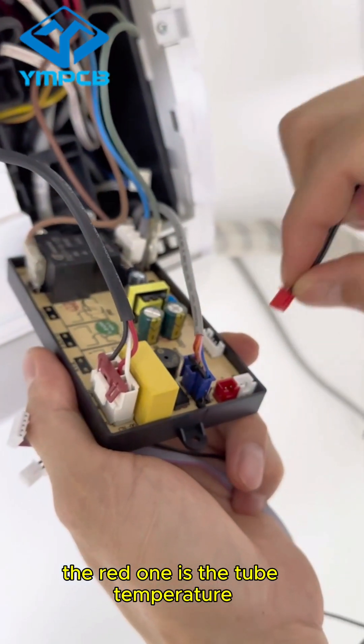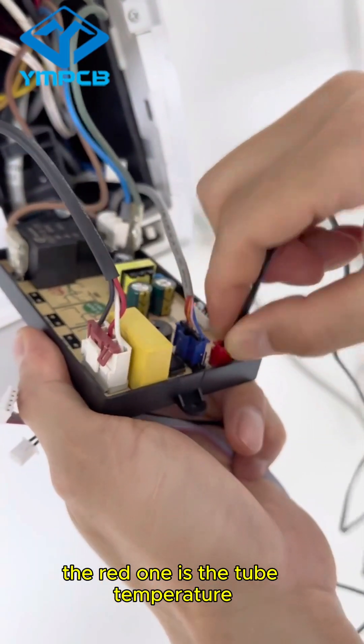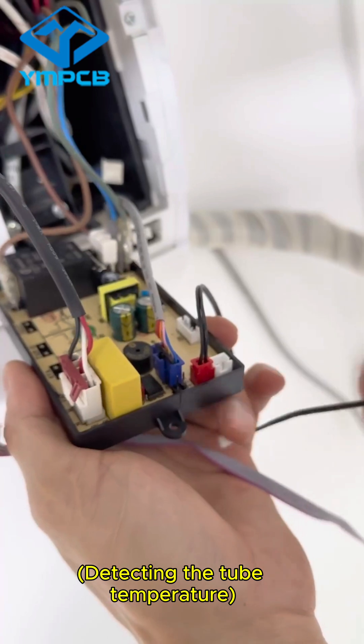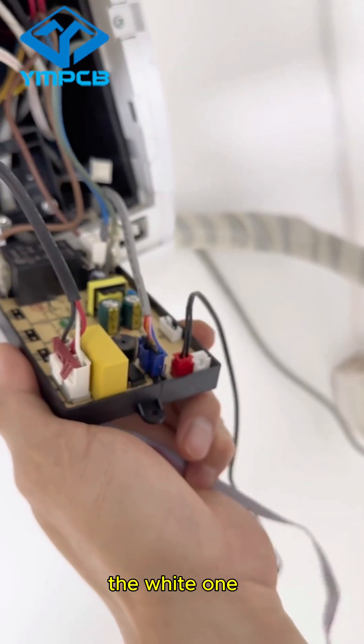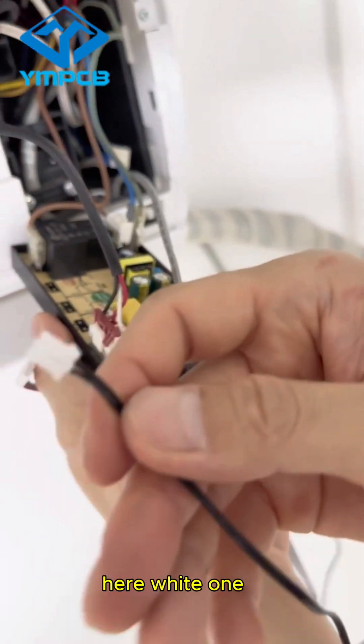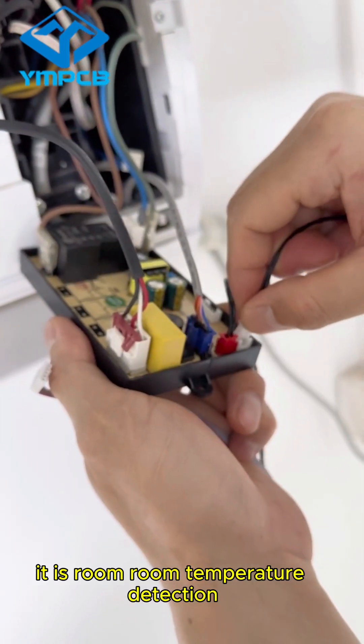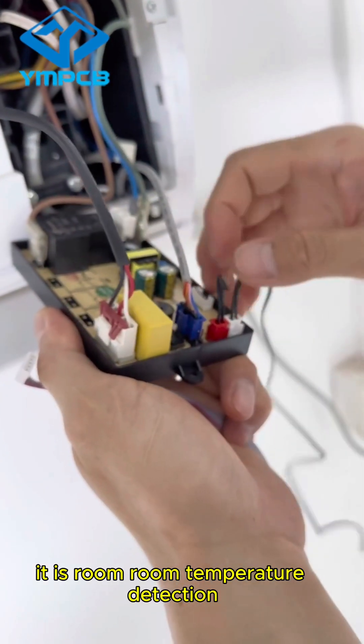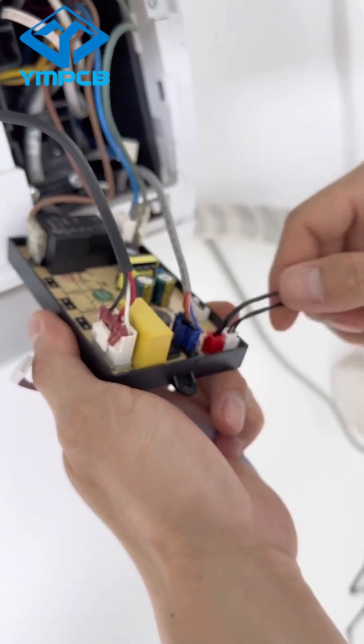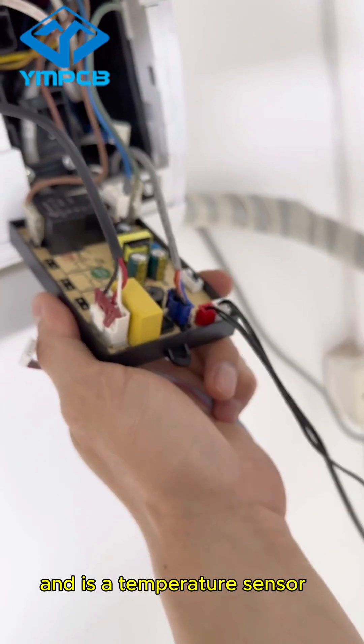The red one is the tube temperature. And the white one here, white one. It is a long temperature detector. And it is a temperature sensor.